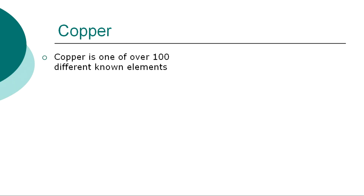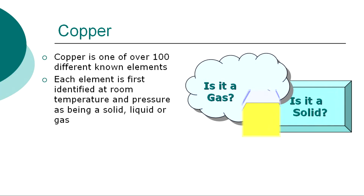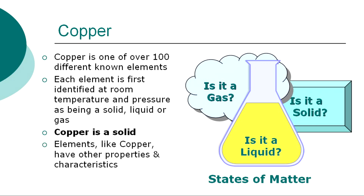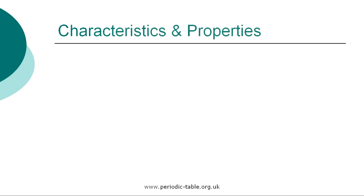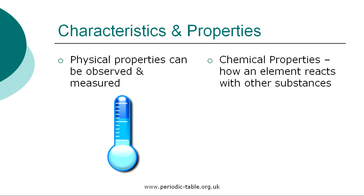The element copper is one of over 100 different chemical elements that are known to modern chemistry. Each element is first identified at room temperature and pressure as being a solid, liquid, or gas, referred to as states of matter. Copper is a solid at normal room temperature and pressure. Each element has physical properties that can be observed and measured, such as color, density, and odor. The chemical properties are the characteristics that determine how a substance will react with other substances, such as water or oxygen.